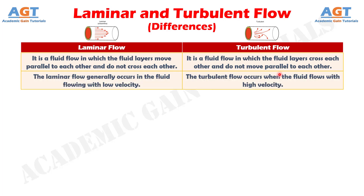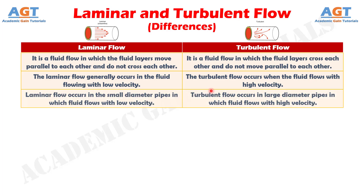Number 2. The laminar flow generally occurs in the fluid flowing with low velocity, whereas the turbulent flow occurs when the fluid flows with high velocity. Number 3. Laminar flow occurs in small diameter pipes in which fluid flows with low velocity, whereas turbulent flow occurs in large diameter pipes in which fluid flows with high velocity.